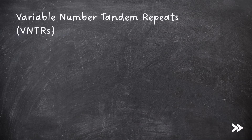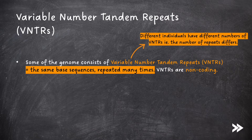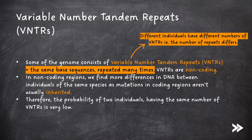We need to know about variable number tandem repeats, which can be abbreviated to VNTRs. Some of the genome consists of VNTRs, which are the same base sequences repeated many times. VNTRs are non-coding. Different individuals have different numbers of VNTRs, i.e. the number of repeats differs. In non-coding regions, we find more differences in DNA between individuals of the same species, as mutations in coding regions aren't usually inherited. Therefore, the probability of two individuals having the same number of VNTRs is very low.